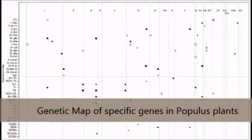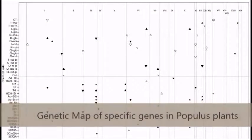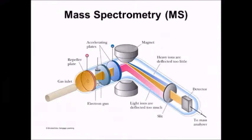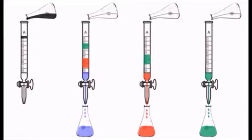In the end, they produce a genetic mapping of the different genes. Mass spectrometry sorts ions based on their mass-to-charge ratio, while liquid chromatography separates a sample into different parts.